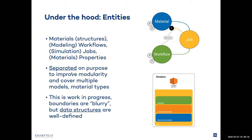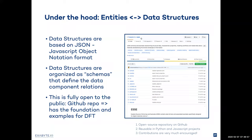In many cases when computational science is performed, the information about materials and the information about models are bundled together. That kind of approach makes it very difficult to scale the simulations beyond one certain kind of material — that's why we on purpose separated these entities. This work is still in progress, so the boundaries can sometimes be blurry, but the data structures are very well defined. When we think about the data structures, we have to look at the repository called SE and the JavaScript Object Notation JSON schemas.